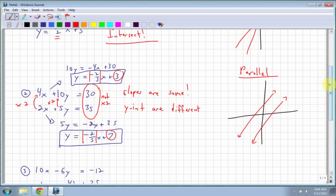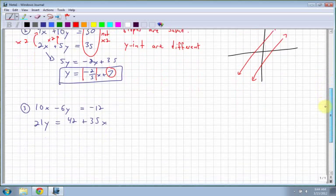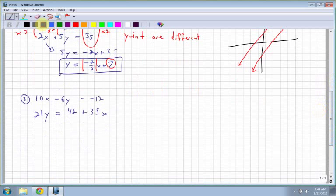All right, last one here. Now it's hard to compare when you have x's and y's, so a good idea is to get all the x's on one side. So for this one, the top equation, I can leave the negative 6y where it is, move the x term over, so I get negative 12 minus 10x, and the bottom I get 21y equals 42 plus 35x.